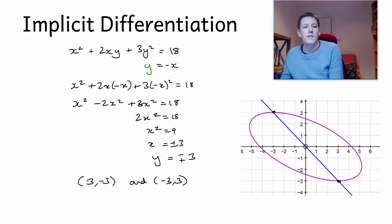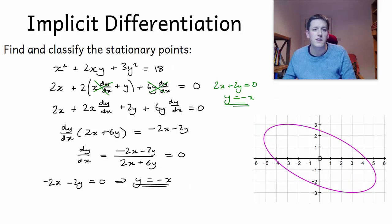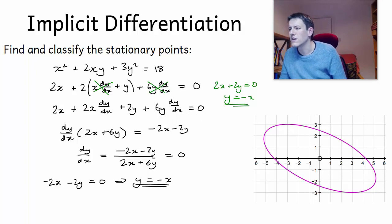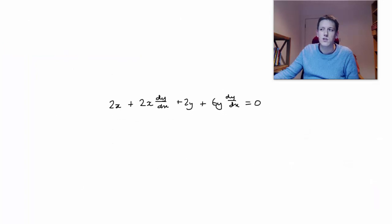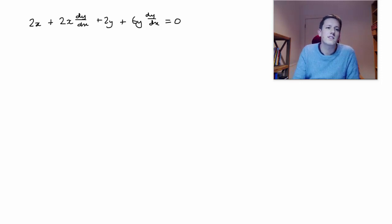So I've got stationary points at (3, minus 3) and also at (minus 3, 3), and we can see those are exactly the points on the curve. Now the second problem was to classify the stationary points, and we'll do that using the second derivative in the usual way. To do that, I'm going to take an earlier line of working and differentiate it again to find the second derivative. You could try using the quotient rule on the explicit dy/dx expression, but trust me it's much easier to take a line still in implicit form and differentiate that again.